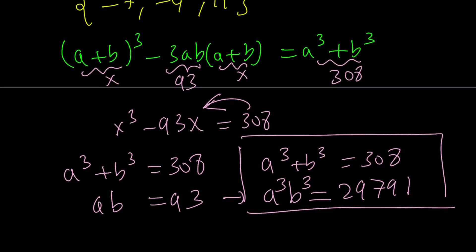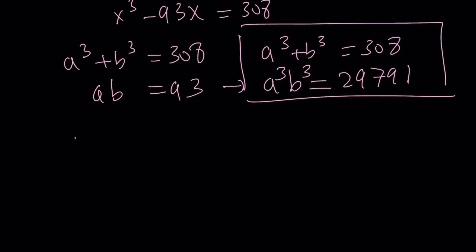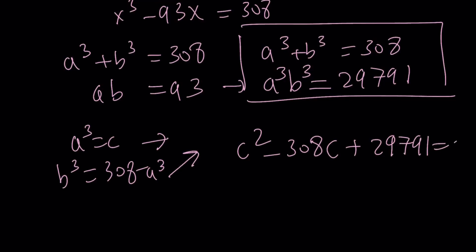If you replace B cubed with 308 minus A cubed here, you're going to get a quadratic. Of course, you have to replace A cubed with C, so on and so forth. And this is the equation you get after replacing A cubed with C and doing the replacements, like replacing B cubed with, oh man, a lot of replacements. Substitution is awesome. You get the following equation: C squared minus 308C plus 29,791. What? That's a crazy number. And if you solve this equation, you're going to get the value of C. And then if you cube root it, you're going to get the A and the B and then add them up. Good luck.